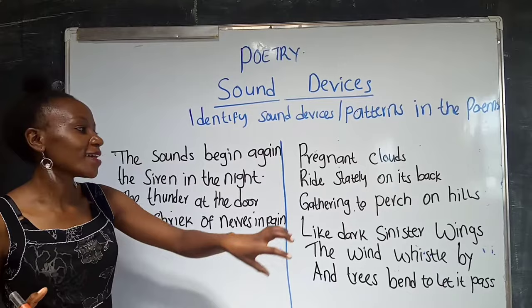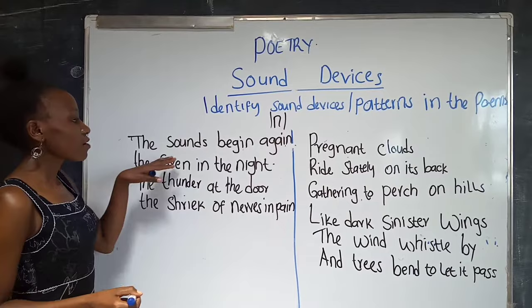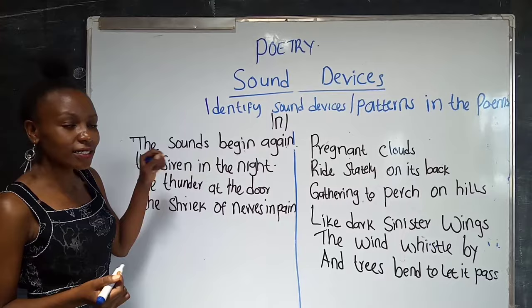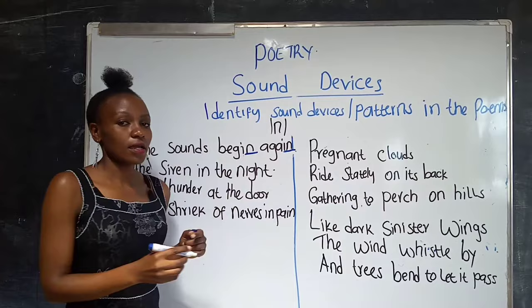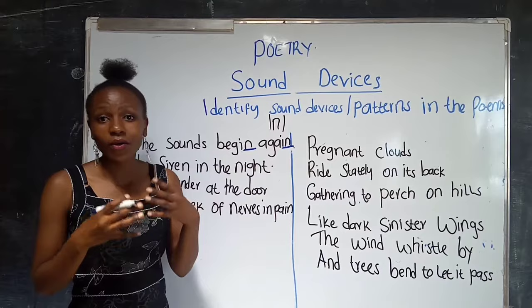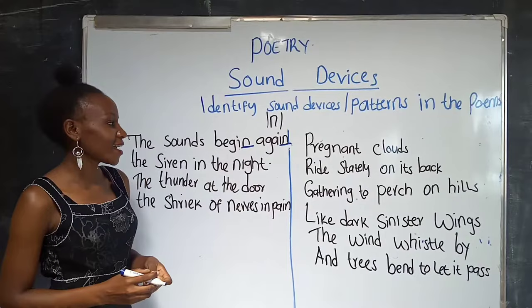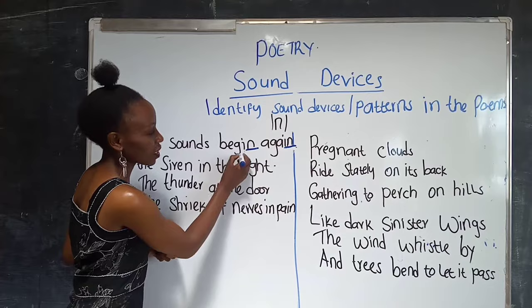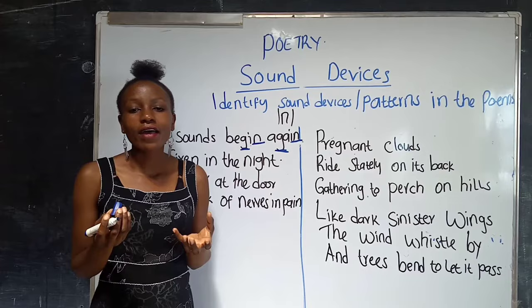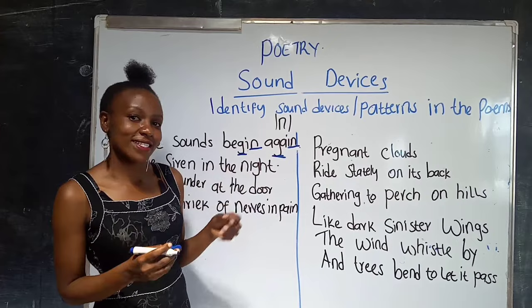You can pause the video and try to find them yourself. The first poem: 'The sounds begin again.' In the first line, we have the N sound at the end of 'sounds' and 'begin' — consonant sounds occurring at the end of words that follow each other closely, so that is consonance. Also in 'begin' and 'again,' we have that same N sound repeated in the middle of two words, and that is also consonance.